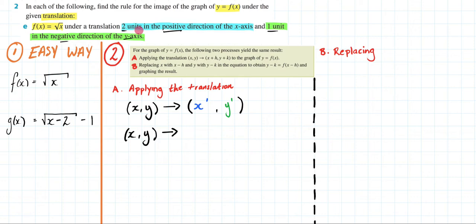It's going to be a translation of two units in the positive x direction. So that means I'm going to take my x and plus two to it. And it will be one unit in the negative direction of the y axis which means I'm going to take my y and minus one from it. So this is my new point. So hopefully you can appreciate that this and this represent the same thing. They represent my new point.